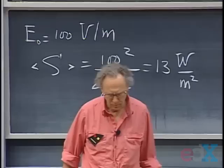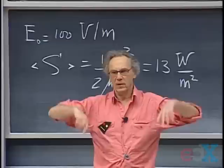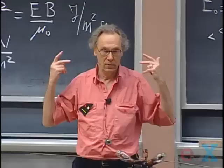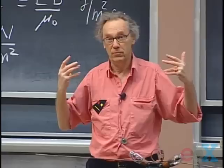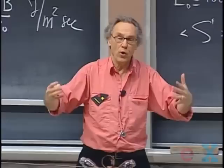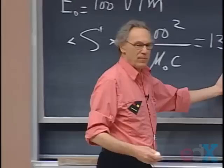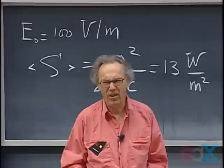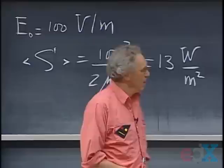Imagine you stand in this electromagnetic wave and absorb it. You probably have a surface area close to one square meter — so 13 watts, or 13 joules per second. That's not very noticeable; you radiate yourself about 100 watts. But if we increase E₀ to 1000 volts per meter, the Poynting vector goes up by a factor of 100, giving about 1.3 kilowatts per square meter. If you absorb that on your body, it may fry you — certainly a deep suntan on the beach.